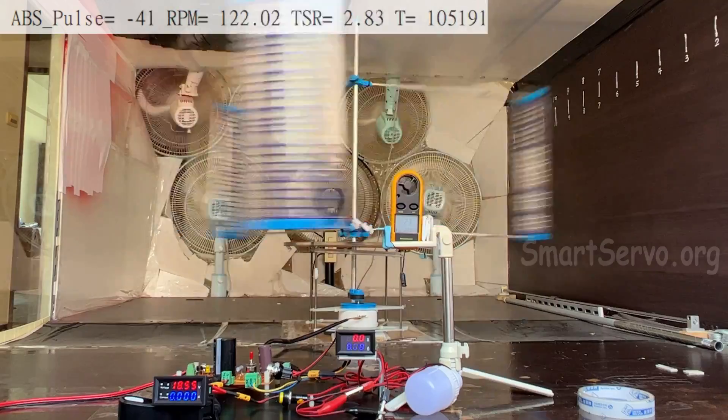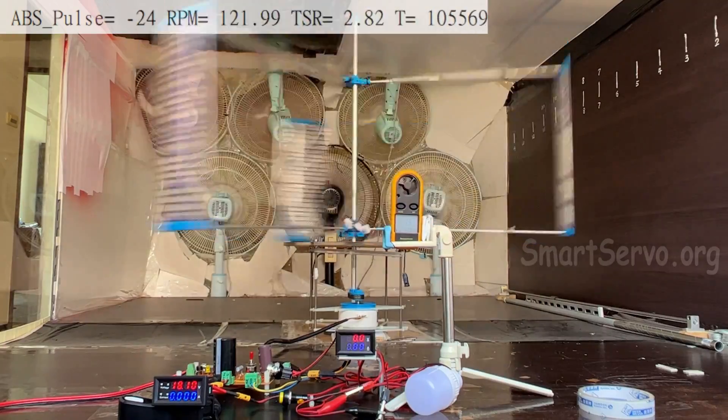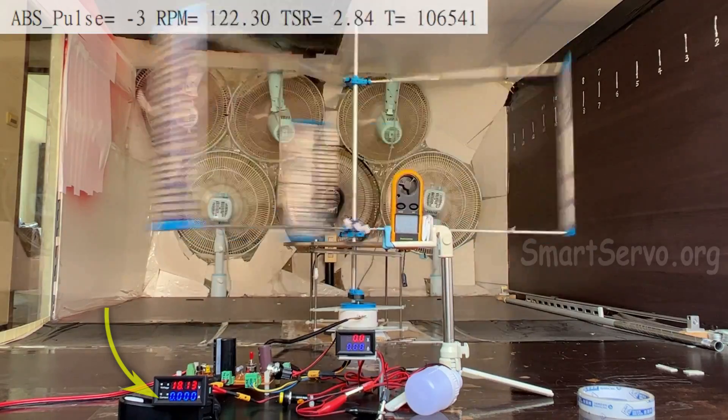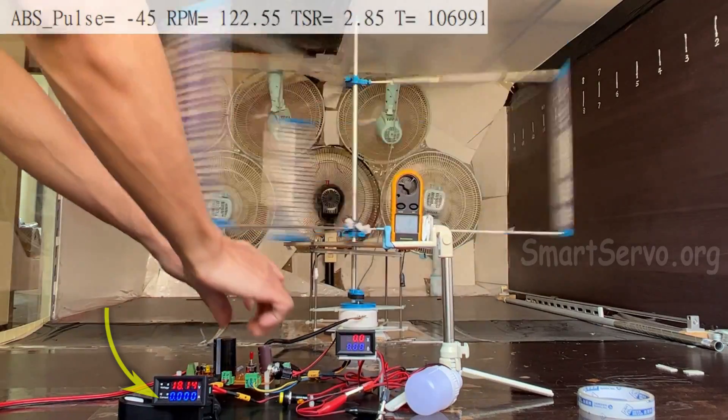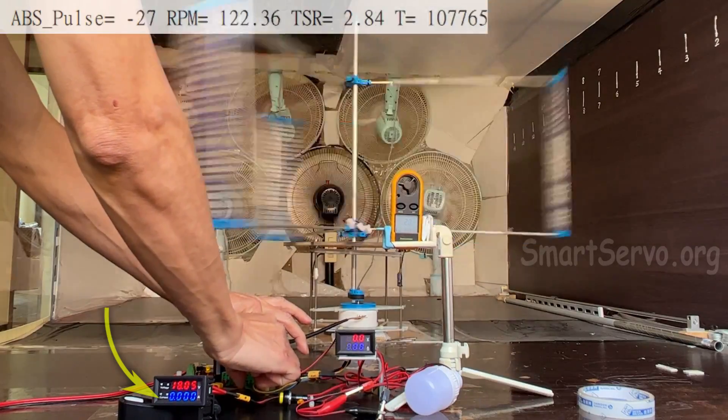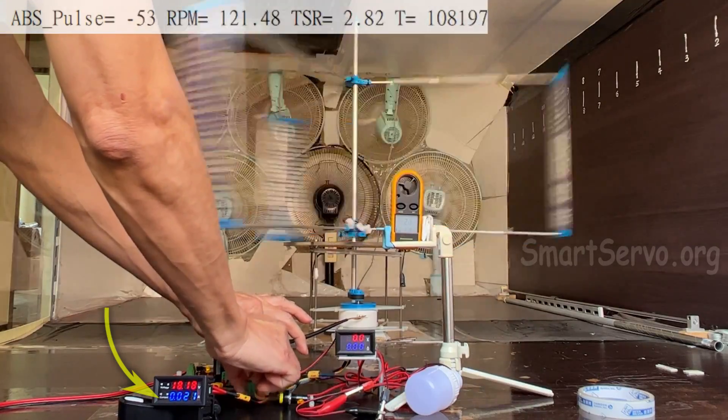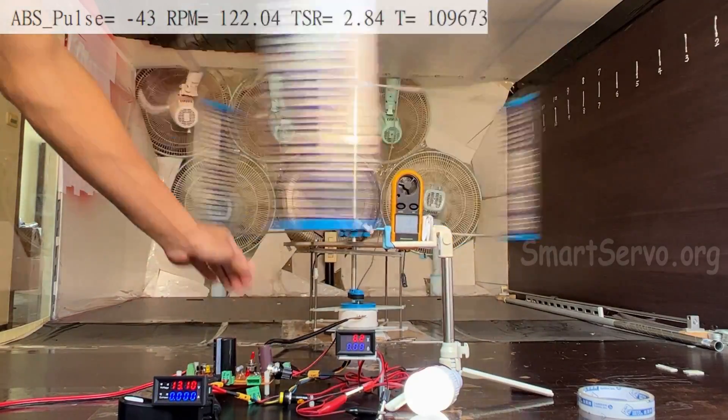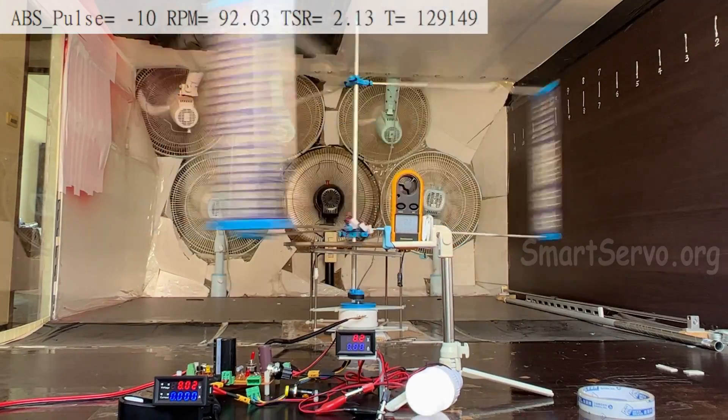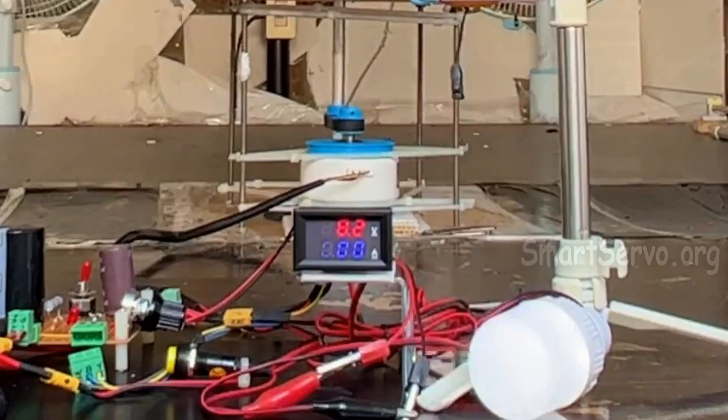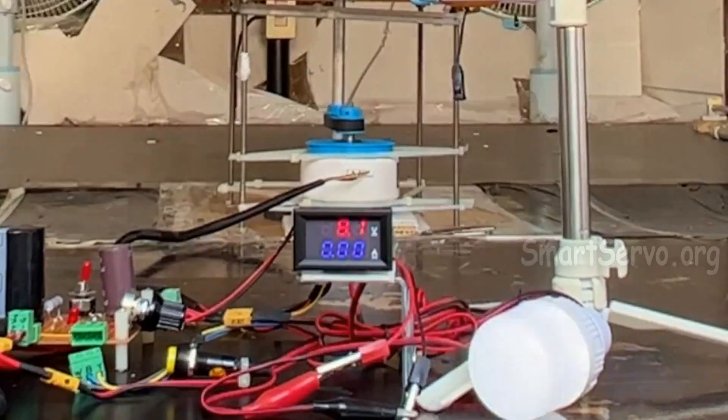The wind turbine can be maintained at around 120 RPM. The meter occasionally shows a small current, which may be VCC interference. Unplug it, then disappeared. Switch to power generation mode. The LED bulb lights up. There is indeed electricity generated, but the current is so small that even an ammeter cannot measure it.